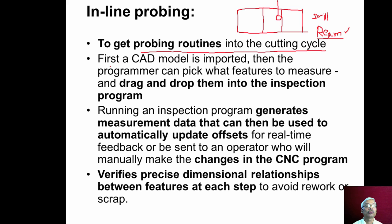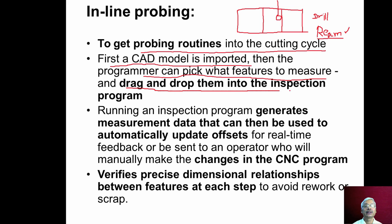In in-line probing, the inspection program should be built into the main CNC program. For that, we import the CAD model, and then the programmer picks what features to measure — such as the diameter, depth of the hole, or pitch circle diameter — and drags and drops them into the inspection program. Running an inspection program generates measurement data that can then be used to automatically update offsets.